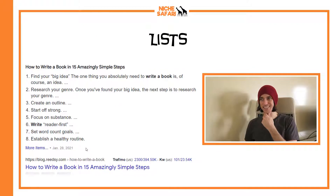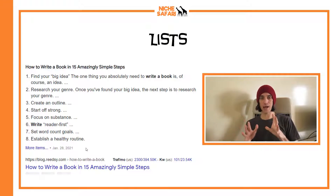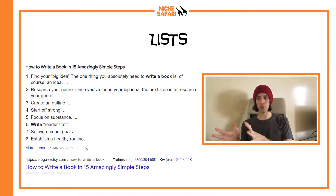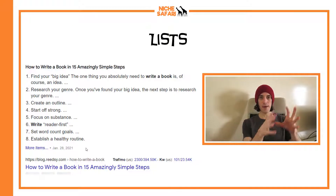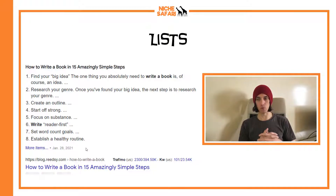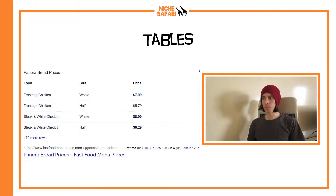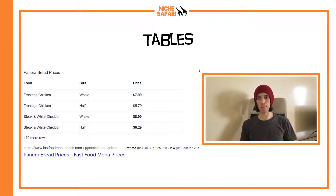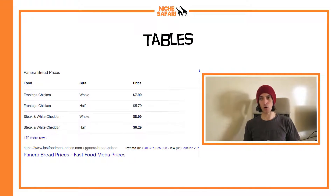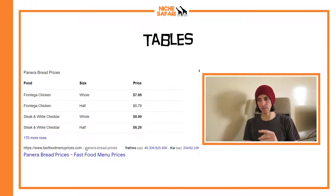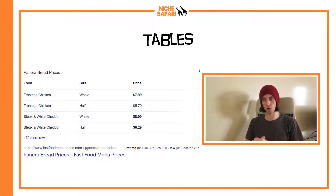The next type is lists. If you type in 'how to write a book,' there is a list snippet where Google has taken the list straight from blog.reedsy.com and placed it at the top of the results. Lists are very common for 'how to' phrases. And the next type is tables — for 'Panera Bread recipes,' fastfoodmenuprices.com created a table and Google took that table and stuck it at the top of the results.